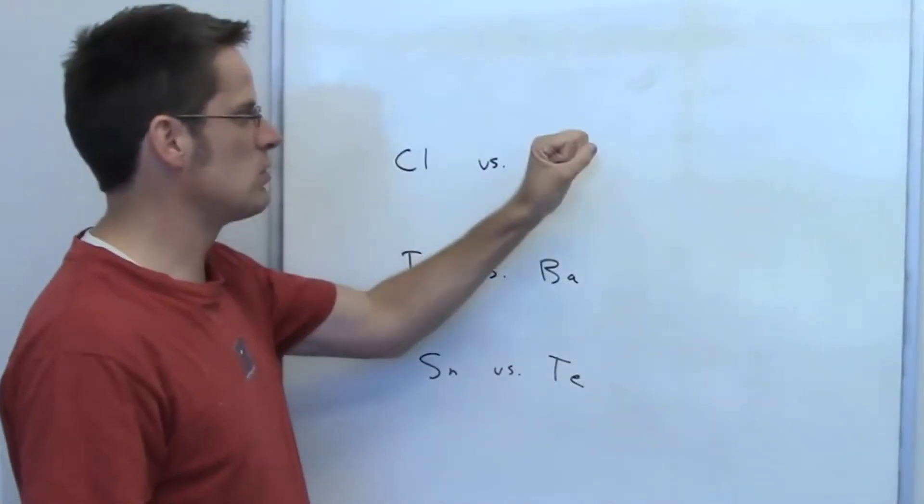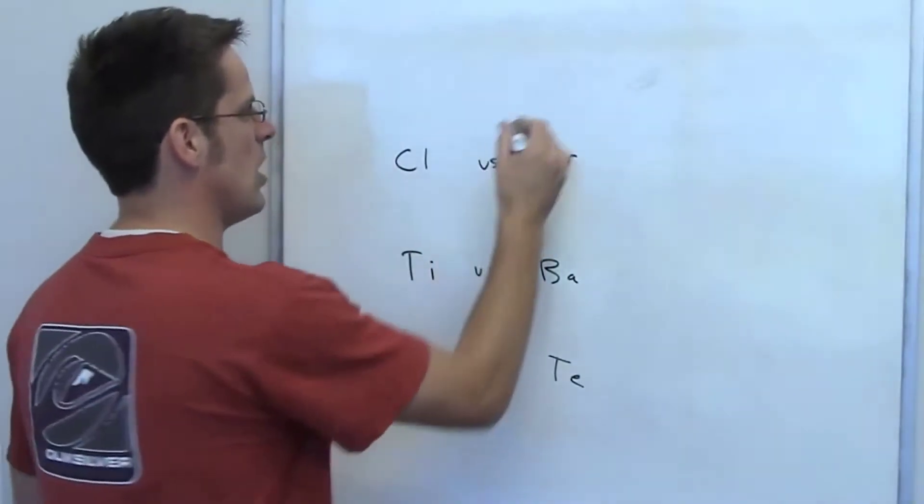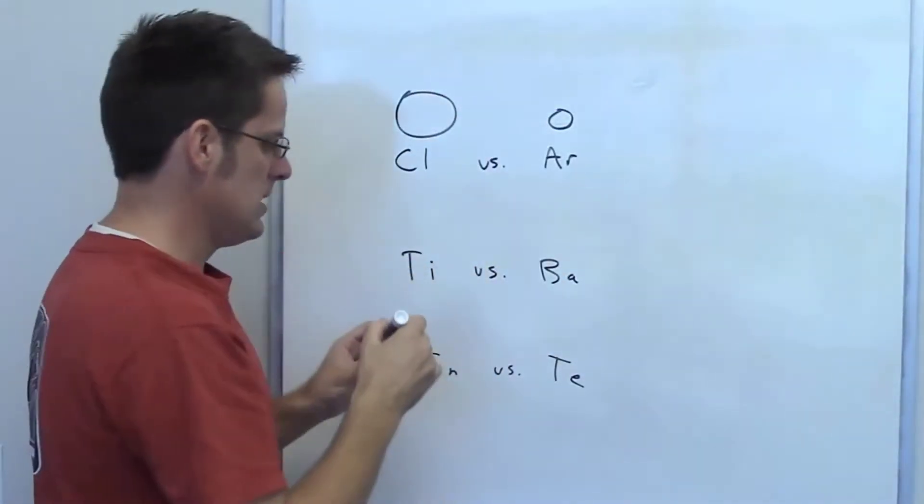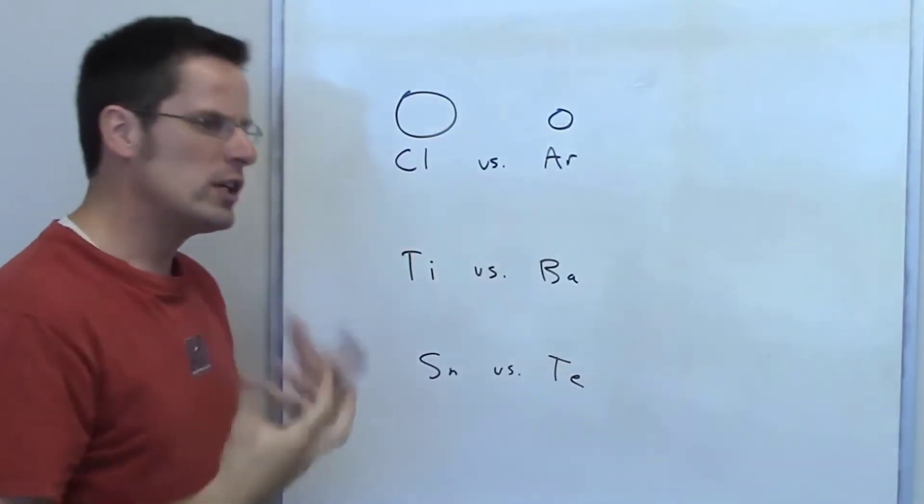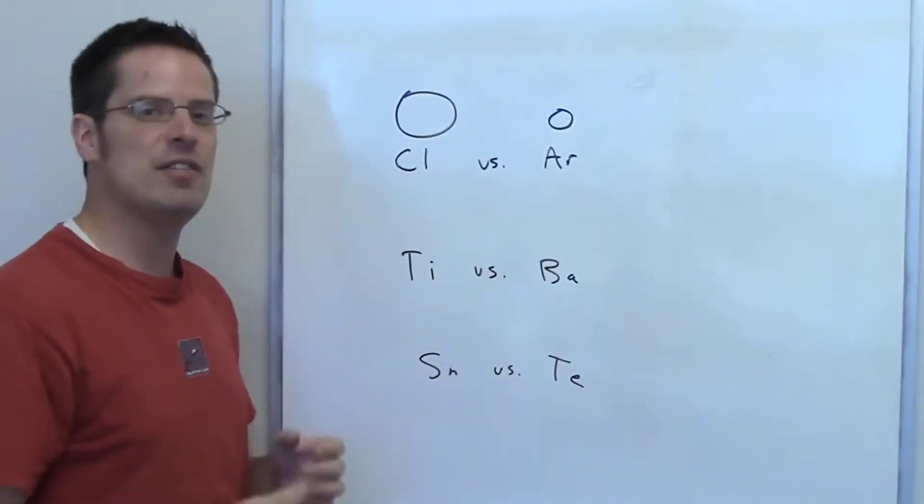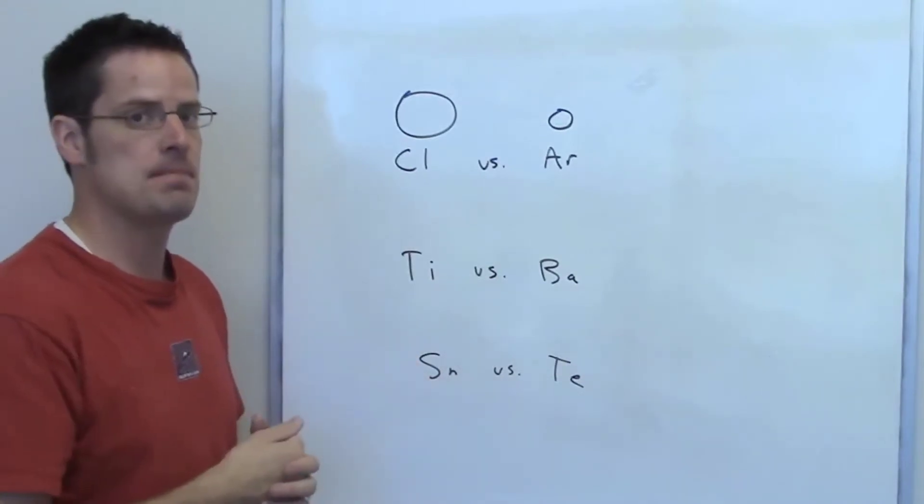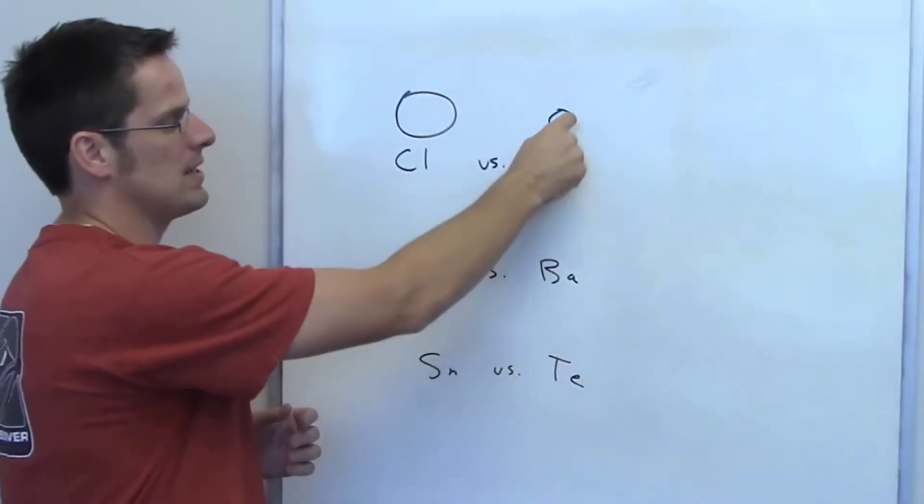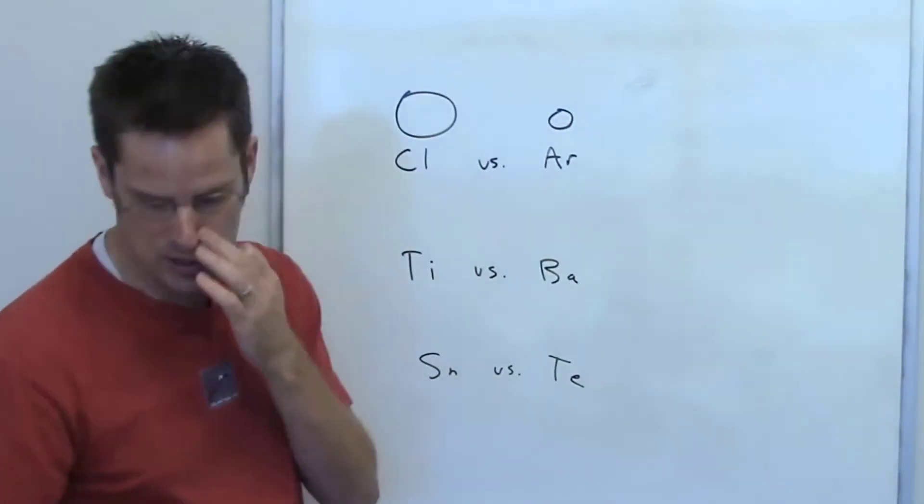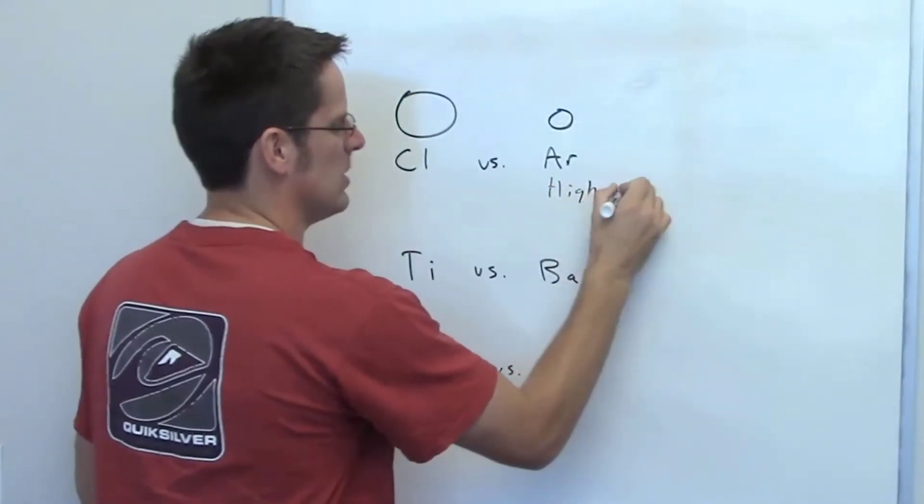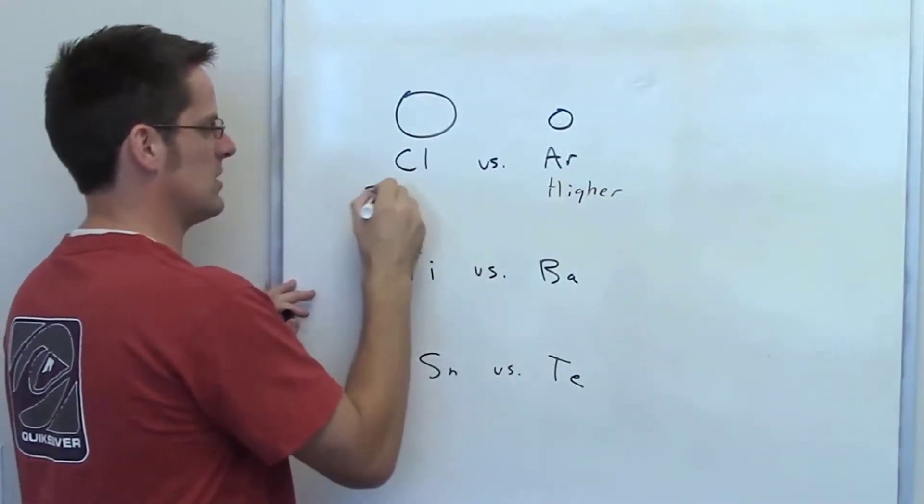So argon is going to be smaller than chlorine - we can sort of draw an imaginary circle, there's argon and there's chlorine - because argon has one more proton than chlorine does. Which one of these two elements is going to be more difficult to remove an electron from? It's going to be argon, because its electron is closer to the protons in the nucleus. Therefore, argon is going to have the higher first ionization energy, whereas chlorine is going to have the smaller.